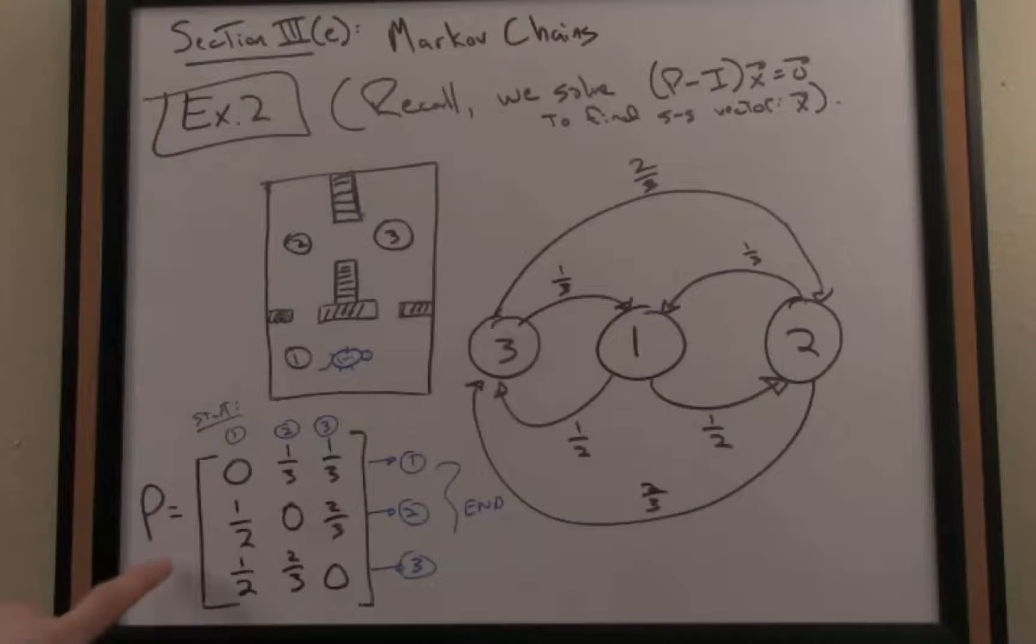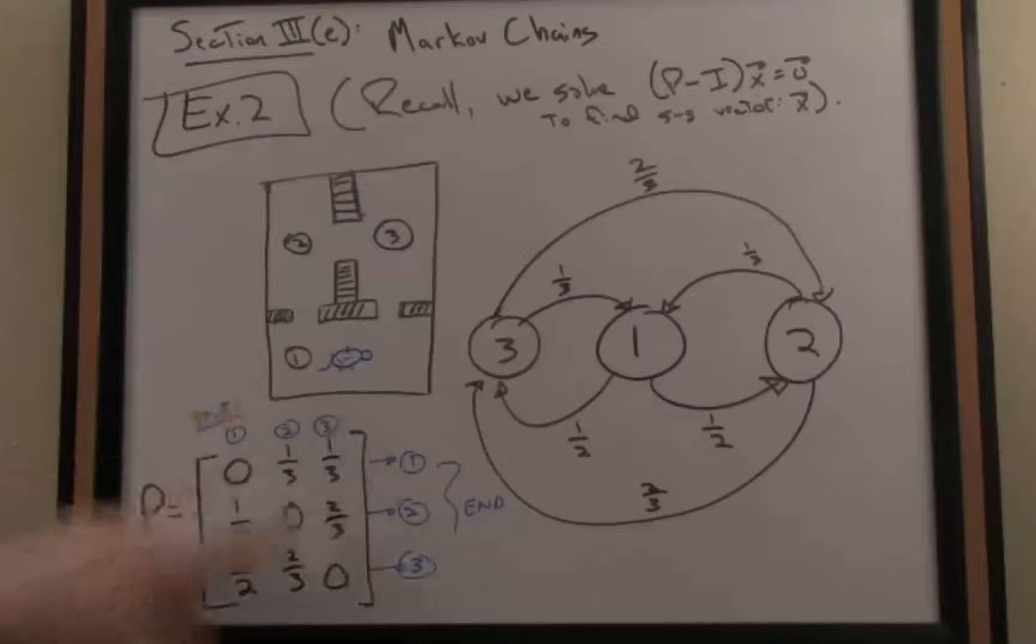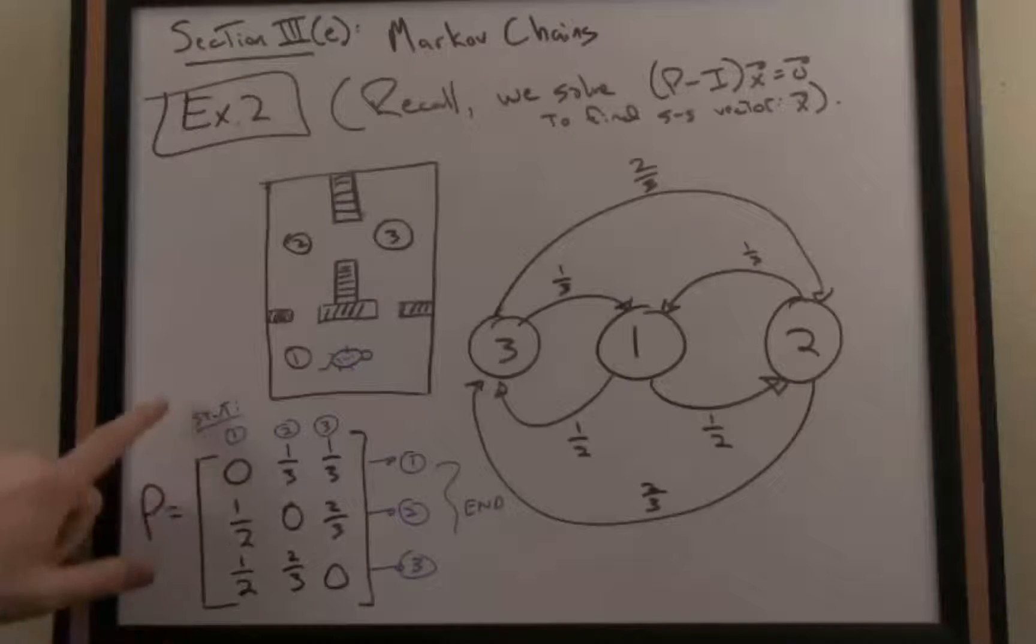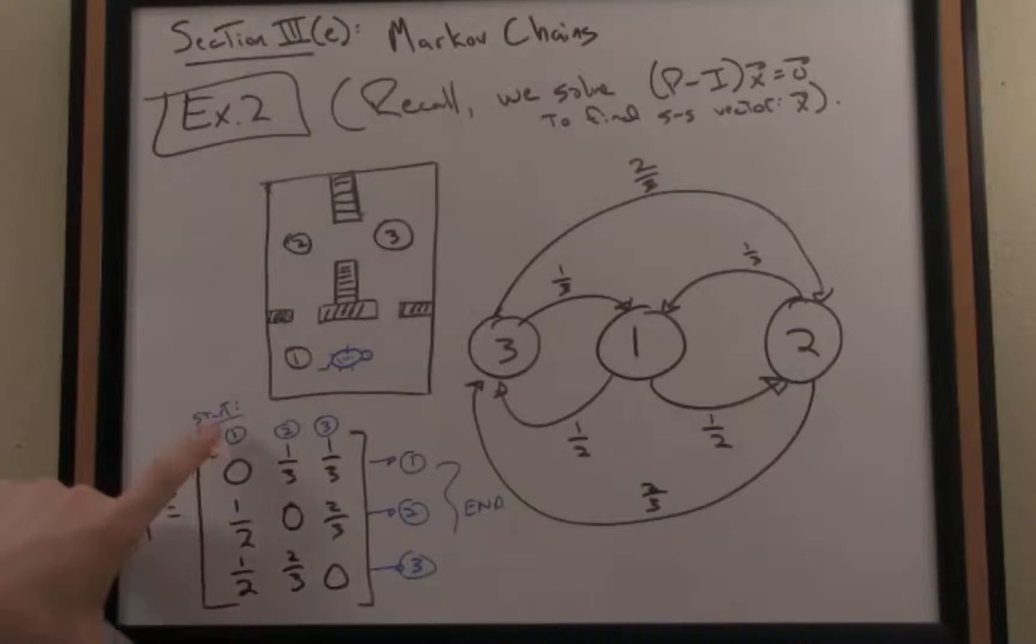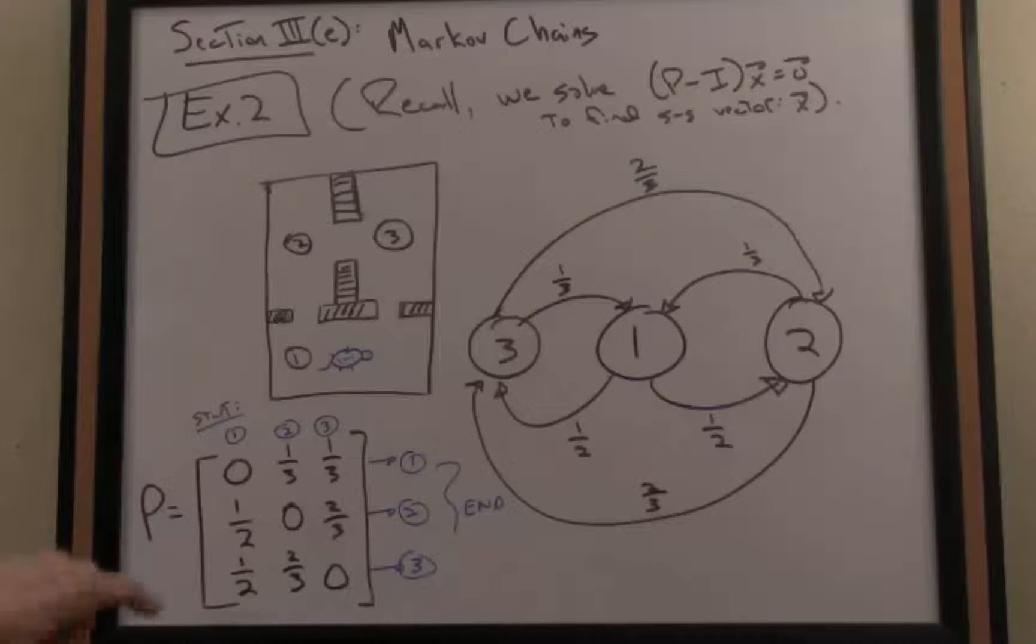Just eyeballing the stochastic matrix here to make sure we can make sense of it. The way you want to read this is, I have the columns representing my starting place and the rows representing my end place. So for instance, if I'm in room one, the probability of staying to room one is zero, as we just mentioned.